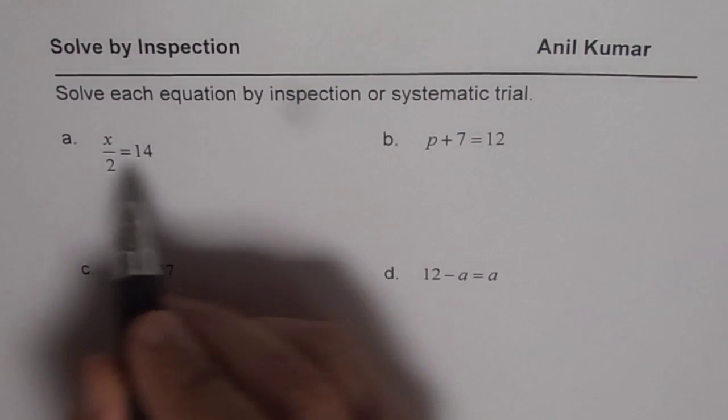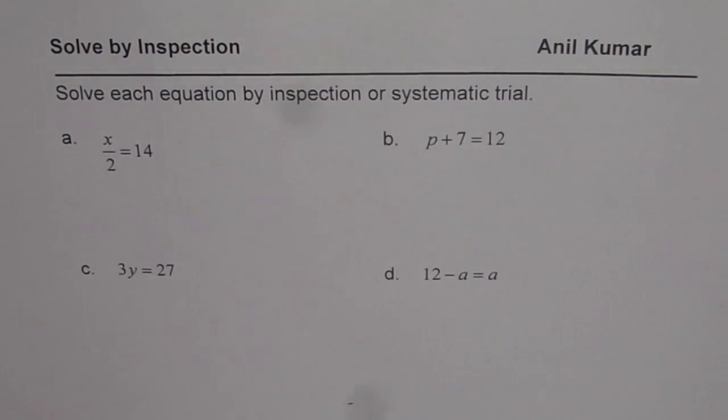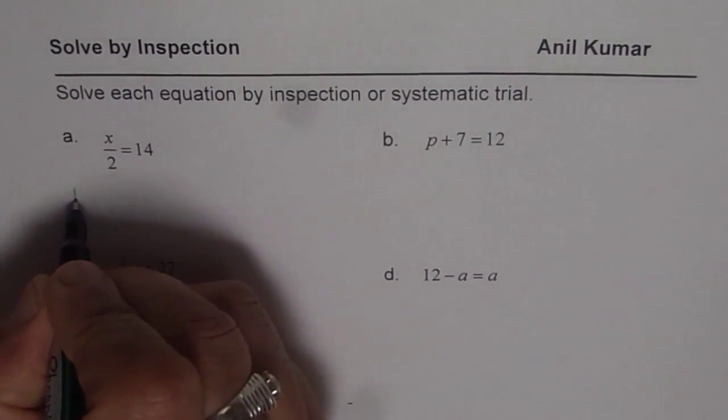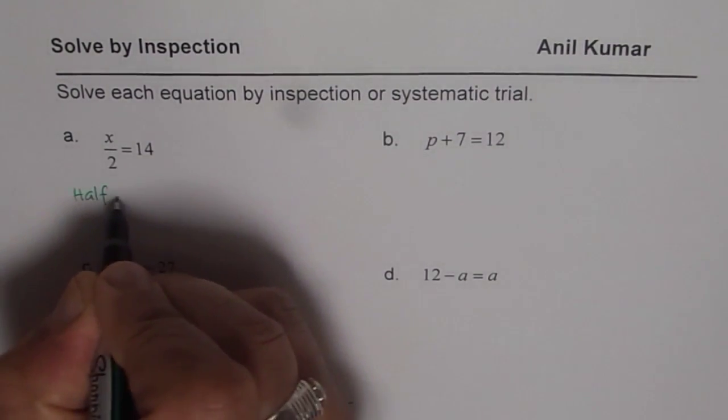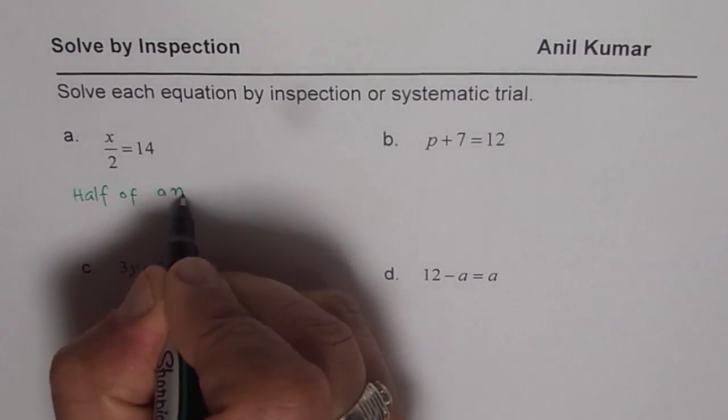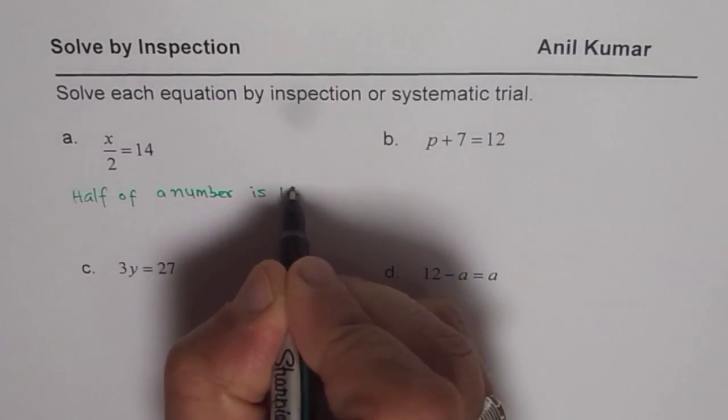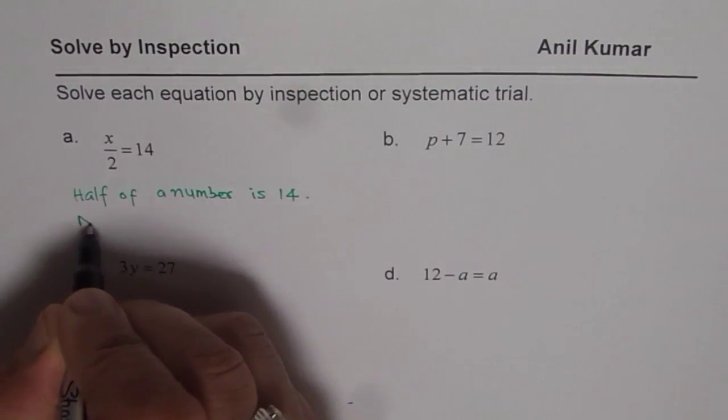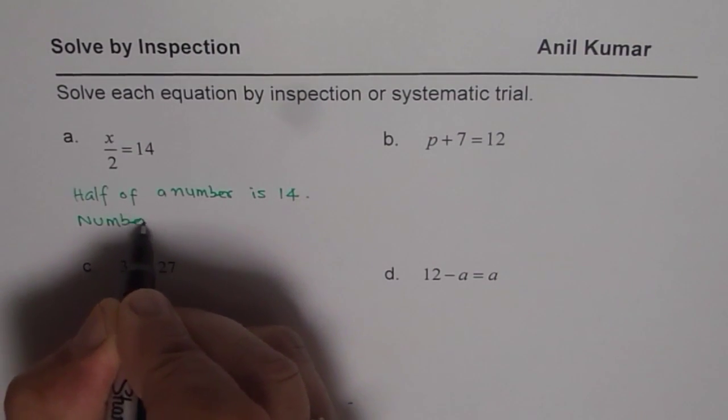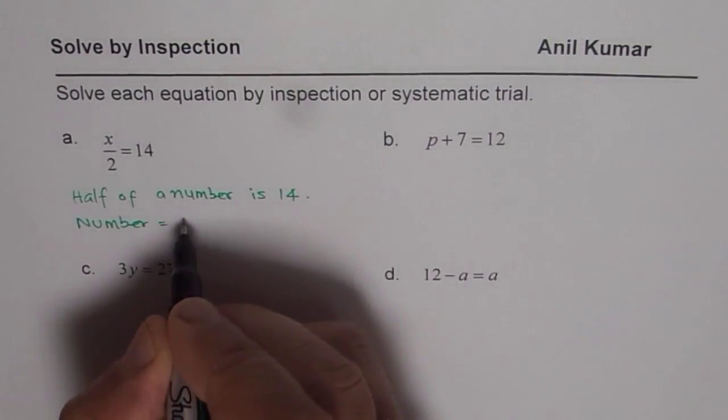So by inspection we can answer like this. Half of a number is 14, so that is our thinking. We say the number should be twice this, which is 28.